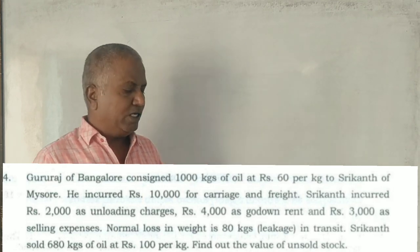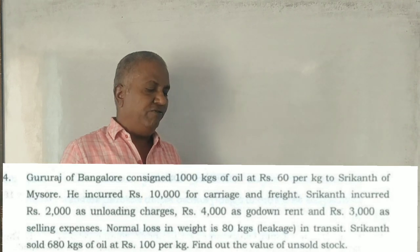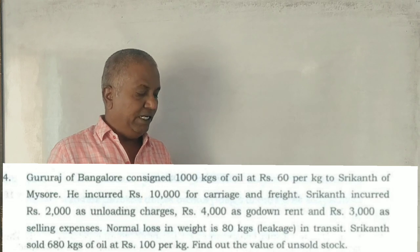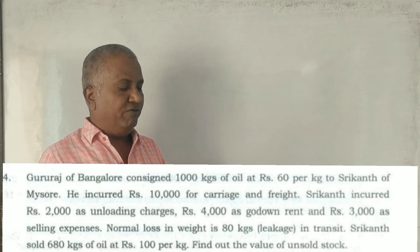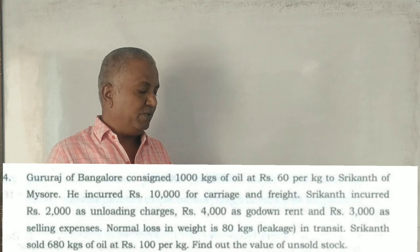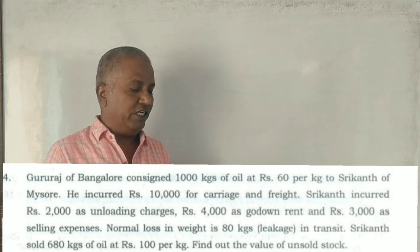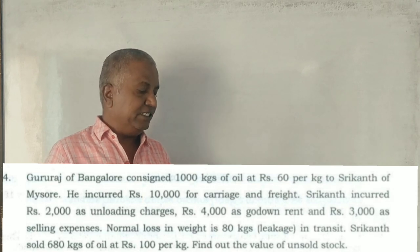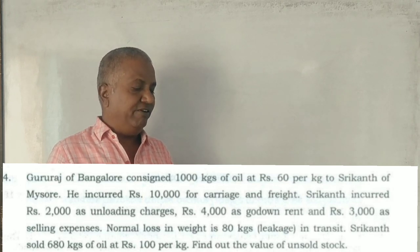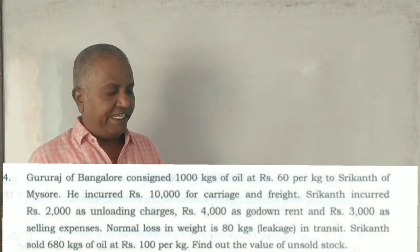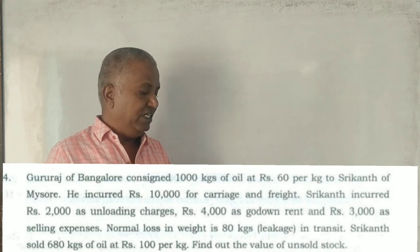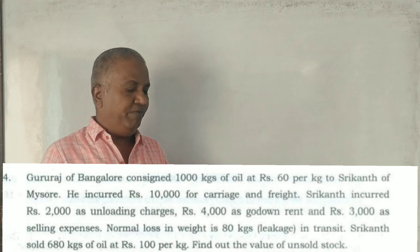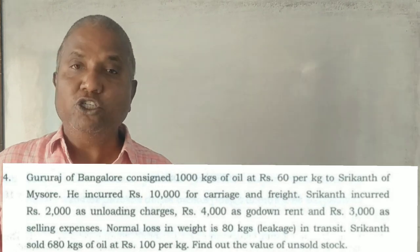Gururadh of Bangalore consigned 1,000 kgs of oil at Rs. 60 per kg to Shrikant of Mysore. He incurred Rs. 10,000 for carriage and freight. Shrikant incurred Rs. 2,000 as unloading charges, Rs. 4,000 as ground rent, and Rs. 3,000 as selling expenses. Normal loss in weight is 80 kgs due to leakage in transit. Shrikant sold 680 kgs of oil at Rs. 100 per kg. Find out the value of unsold stock.